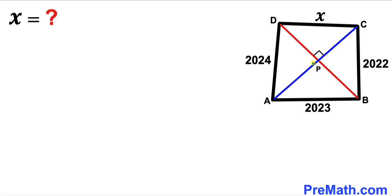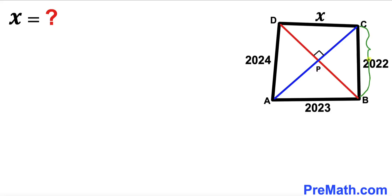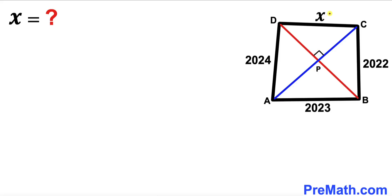Welcome to Pre-Math. In this video we have quadrilateral ABCD such that its side length AD is 2024 units, AB is 2023 units, BC is 2022 units, and finally side CD is represented by X units. We also have diagonals BD and AC that intersect each other at point P, and this angle is 90 degrees. Our task is to find the value of side length X.